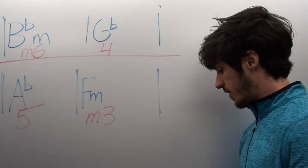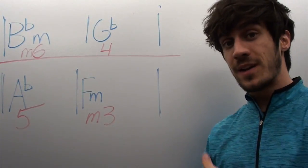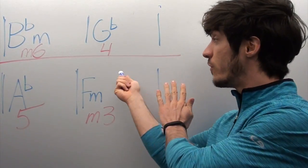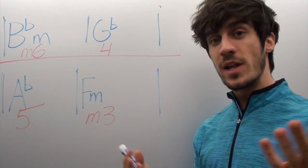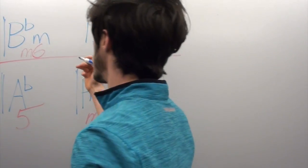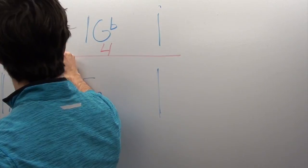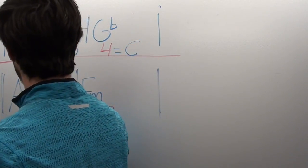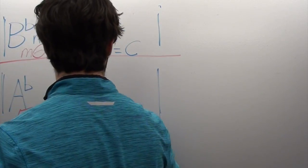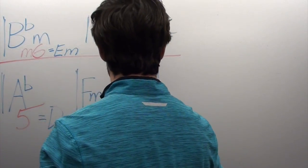Now that we have those numbers, all we need to do is pick another key and we can move these numbers into that key and we have a brand new progression. So let's choose G for example. G is easy. We can use G. So in G, your minor six is an E minor. Your four is a C. Your five is a D. Your minor third is a B minor.